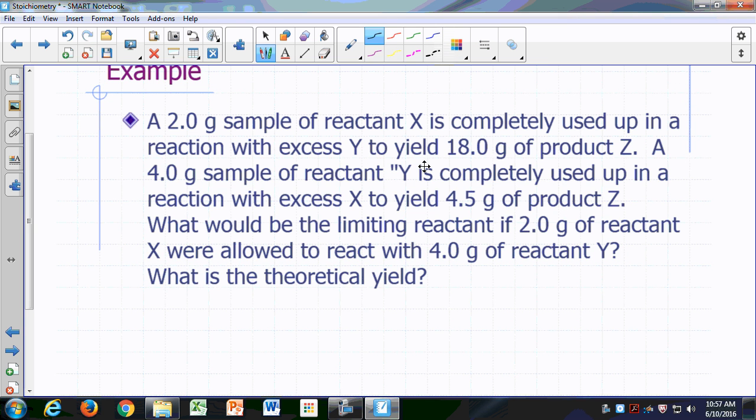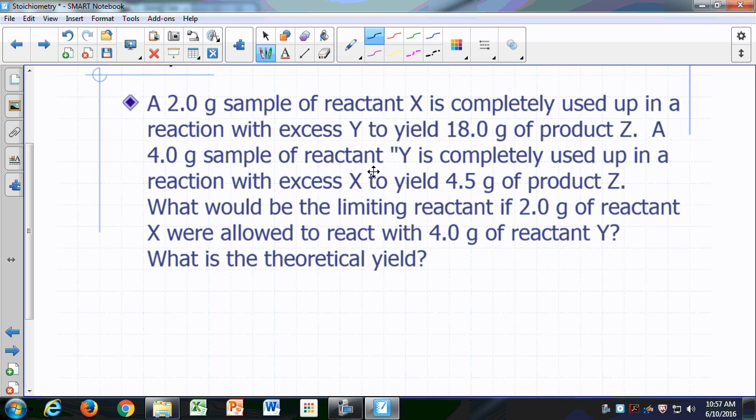Let's look at this example to illustrate the concept of limiting reactant and theoretical yield. Let's say you have a reaction between X and Y, and one of the products you get is Z, plus whatever else you might get.